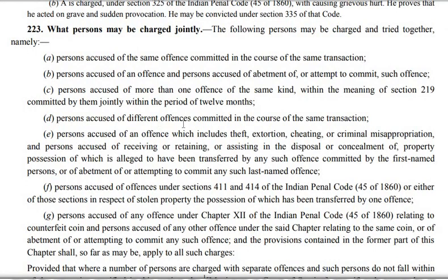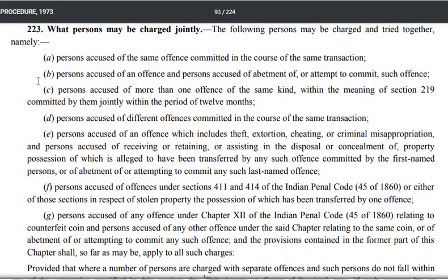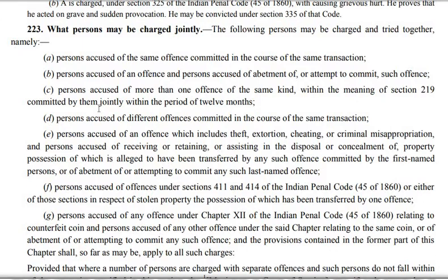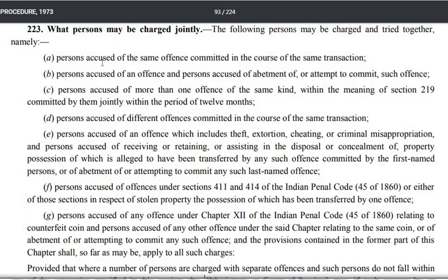Clause D: persons accused of different offenses committed in the course of the same transaction. Now what is the difference between Clause A and Clause D? The difference is: in Clause A they are saying several persons doing the same offense in the same transaction. But in Clause D they are saying several persons doing different offenses in the same transaction.